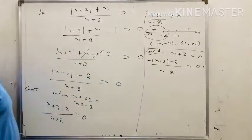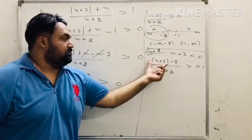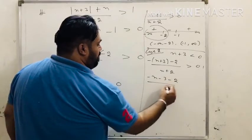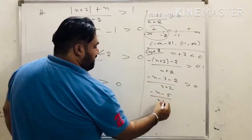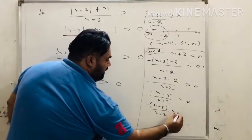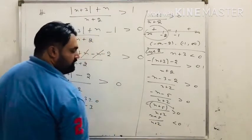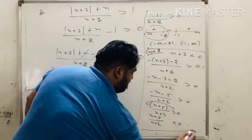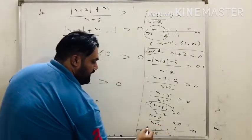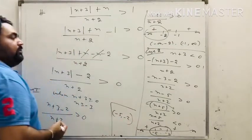Case 2: when x plus 3 is less than 0, the modulus becomes minus x plus 3. So we solve minus x minus 3 minus 2 upon x plus 2 greater than 0, giving minus x minus 5 upon x plus 2 greater than 0. Taking minus as common, x plus 5 upon x plus 2 greater than 0 becomes less than 0 after shifting the sign. Drawing the number line with critical points minus 5 and minus 2, sign pattern plus minus plus, selecting the negative part gives the answer minus 5 to minus 2.